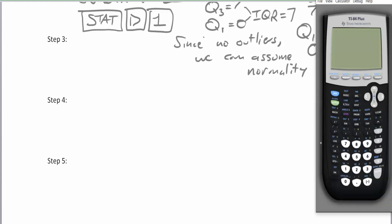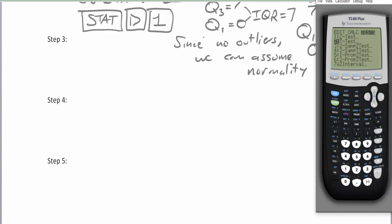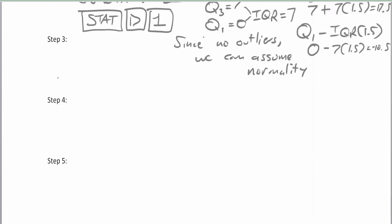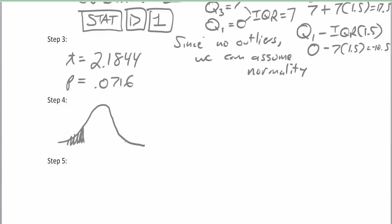Back on the calculator, with our differences in list one, go to STAT, then TESTS, and down to the t-test. The data is in list one, the null hypothesis mu is set to zero, and this time we select 'not equal to' for a two-tail test. Click Draw to see the result: a nice two-tail t-curve with a t-value of 2.1844 — about two standard deviations from the norm — and a p-value of 7.16%.